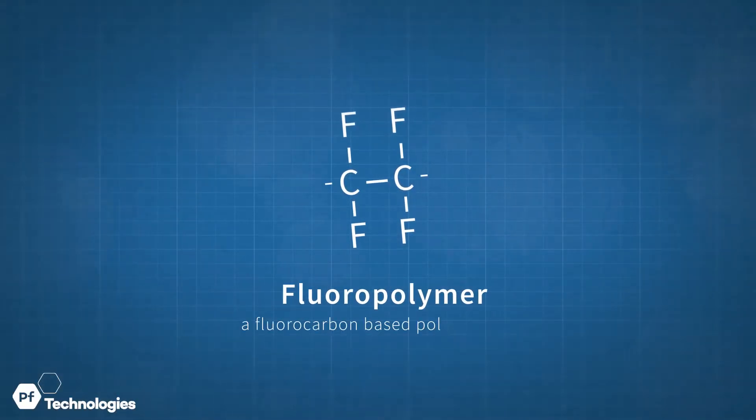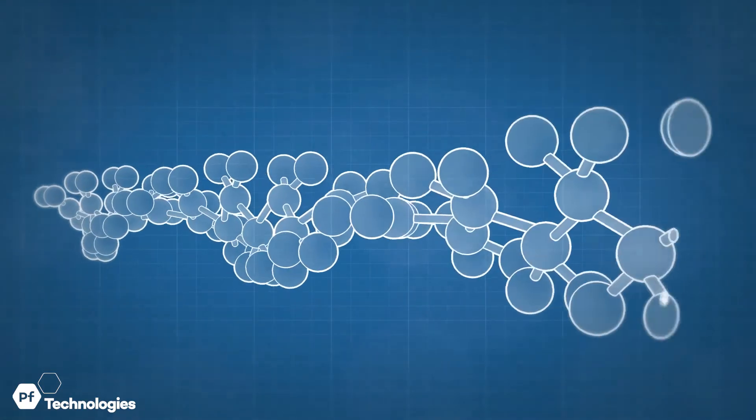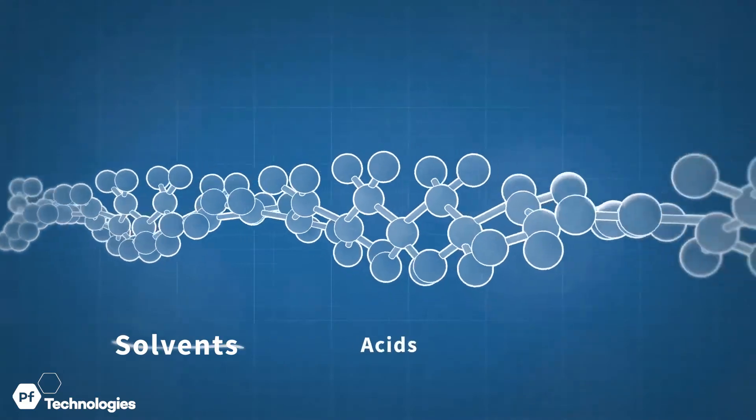Fluoropolymer is a fluorocarbon-based polymer with multiple strong carbon-fluorine bonds. Because of this strong bond, it is highly resistant to solvents, acids, and bases.